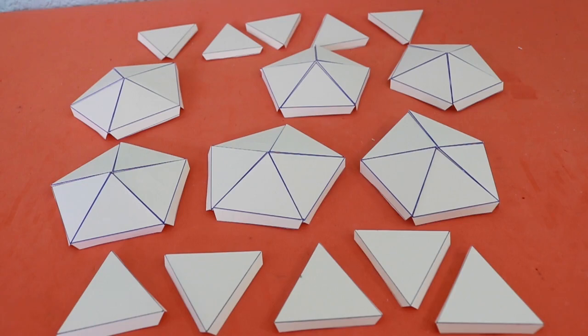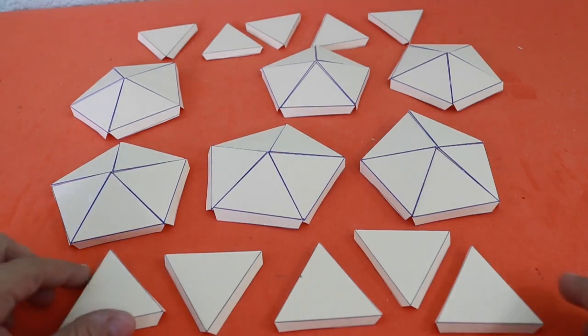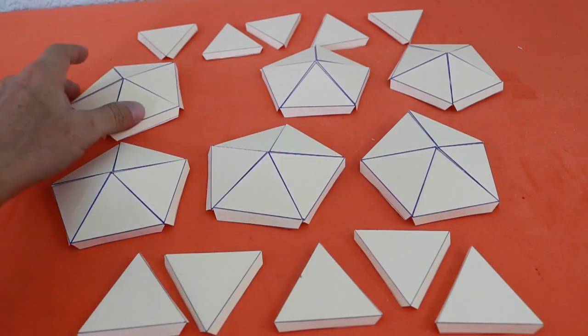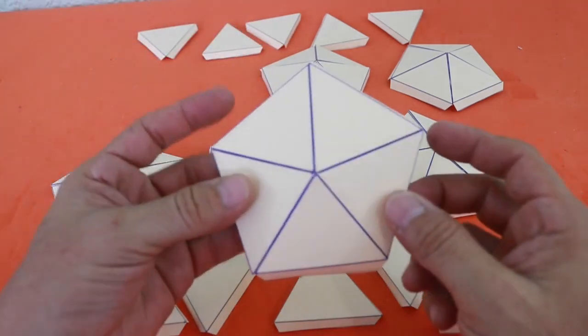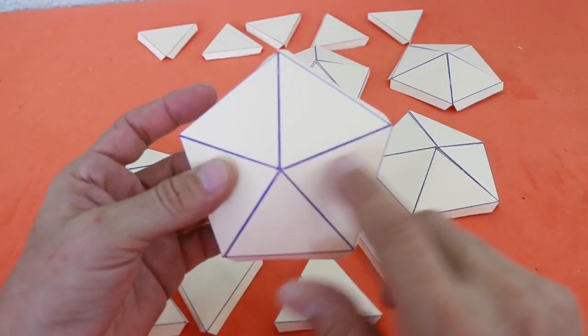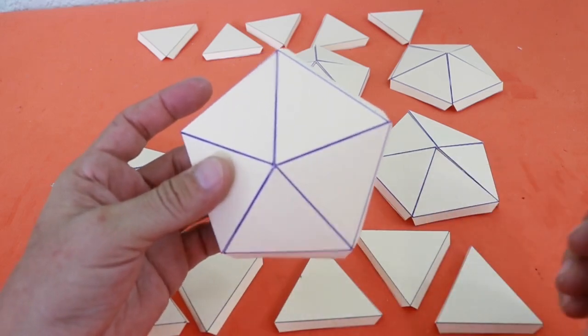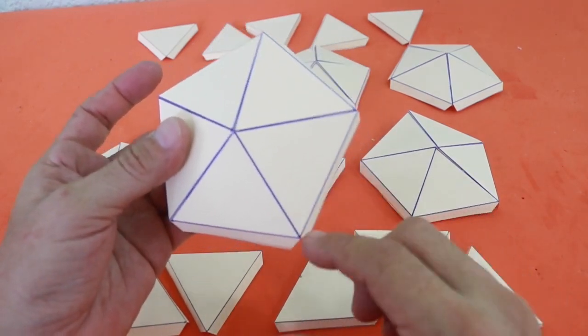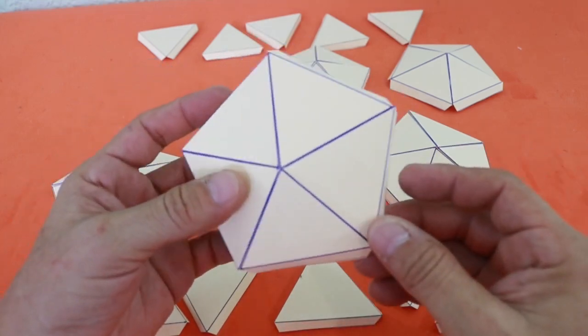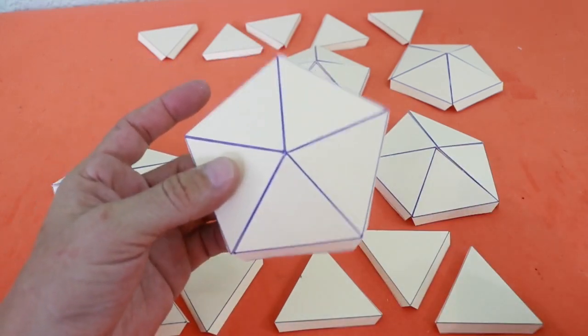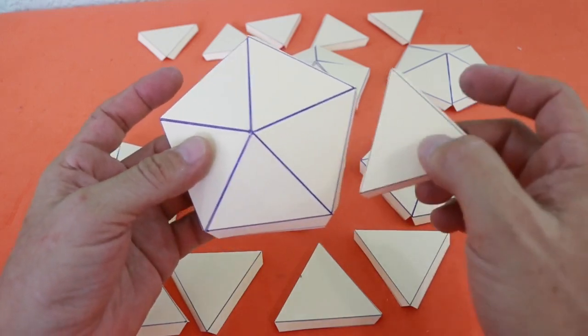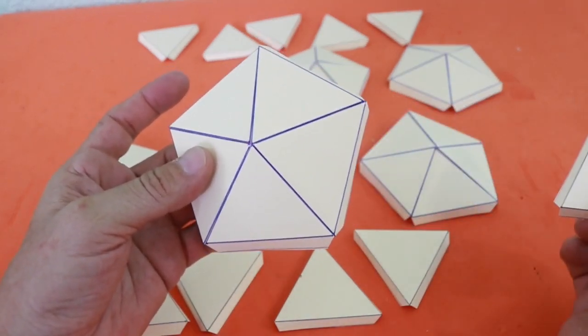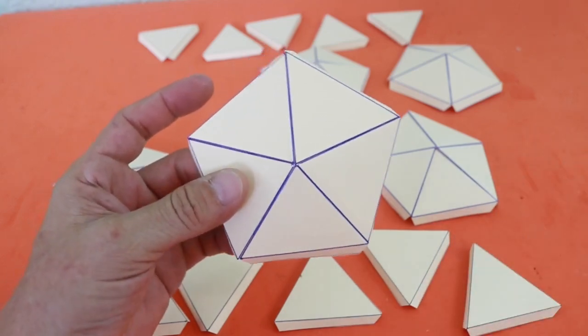Now we have our 6 pentagons and the 10 AAA triangles. Each of the pentagons has radius that has a length of B and the sides have length A. Now you take one of your pentagons and glue 5 AAA triangles to the sides of the pentagon.